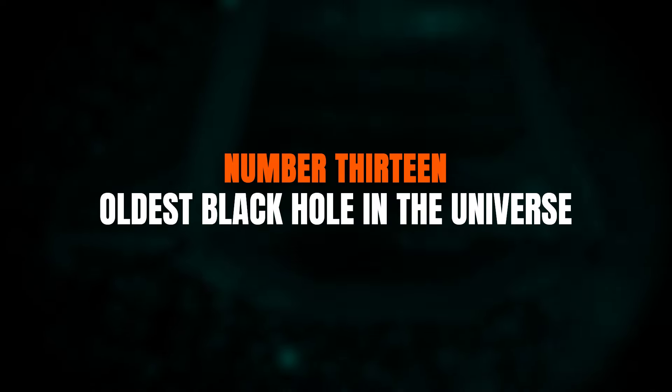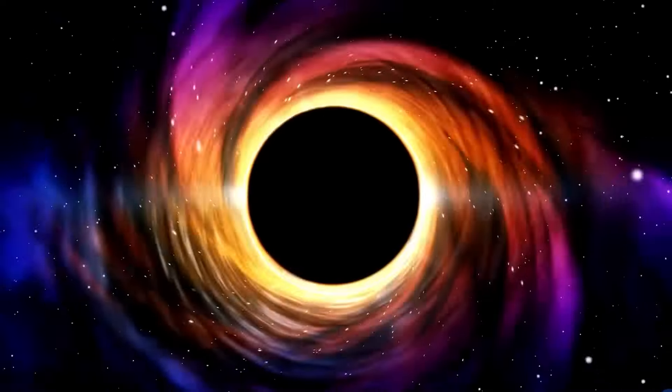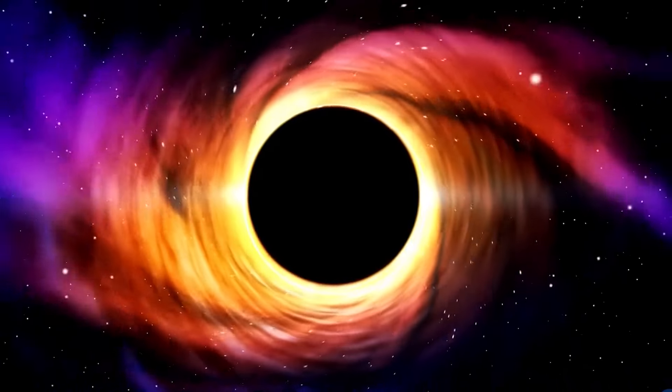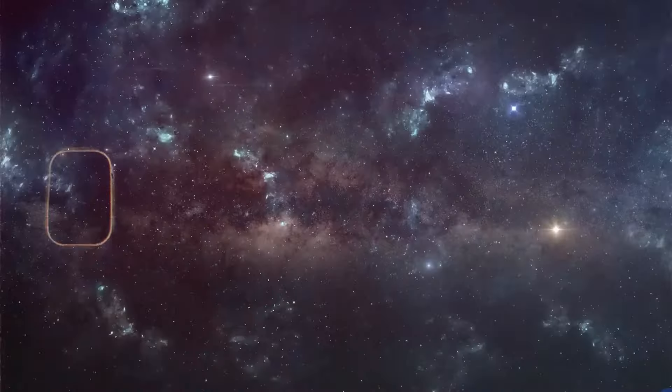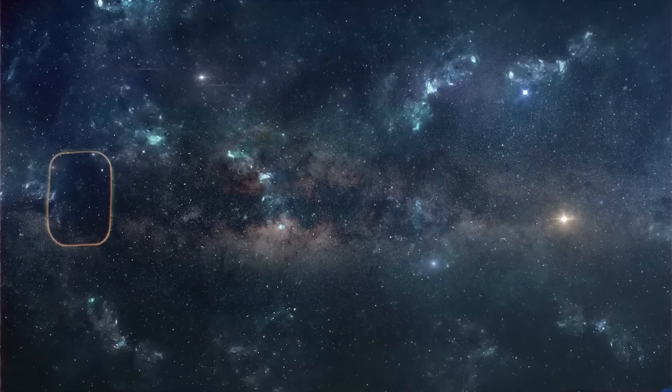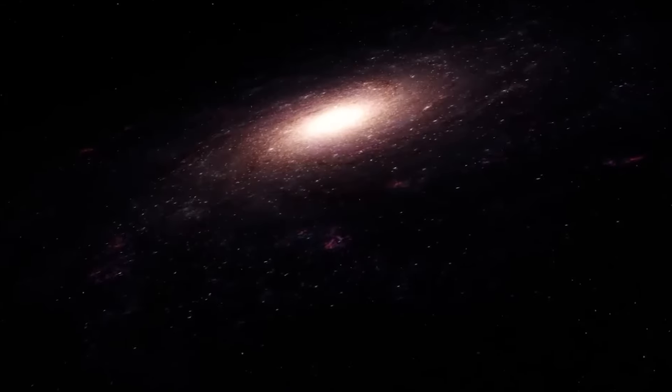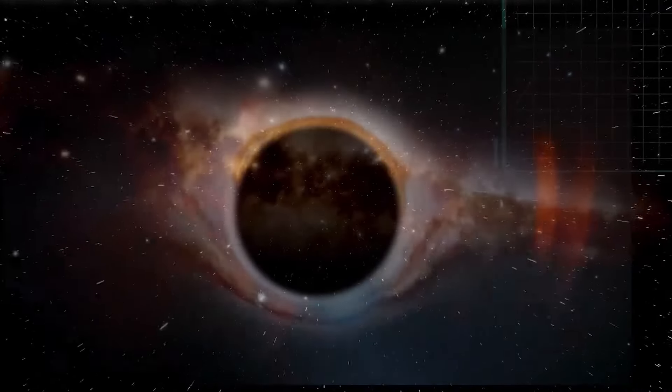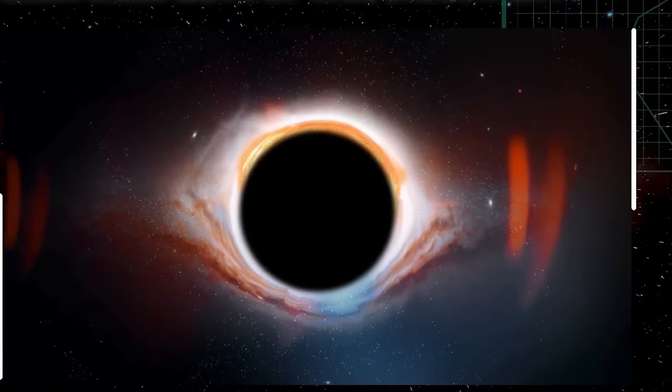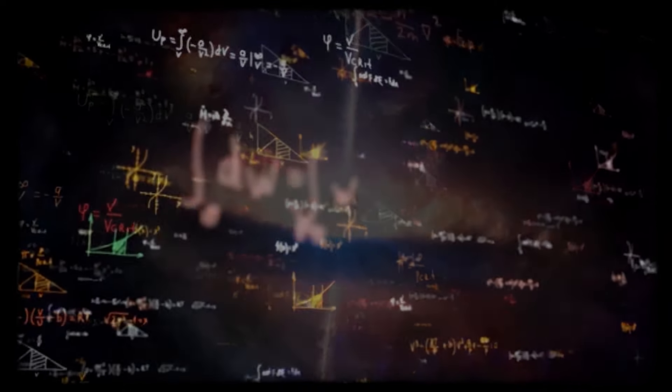Number 13. Oldest black hole in the universe. Imagine peering back over 13 billion years into the past, to a time when the universe was just a cosmic infant. James Webb has done just that. Spotting the earliest known supermassive black hole at the heart of a fledgling galaxy, a mere 570 million years after the Big Bang. This black hole isn't just any ordinary one, it's a behemoth, weighing in at a staggering 10 million times the mass of our Sun. Nestled within a baby galaxy, this discovery hints at a time when such cosmic giants were abundant and growing voraciously during what astronomers call the cosmic dawn.